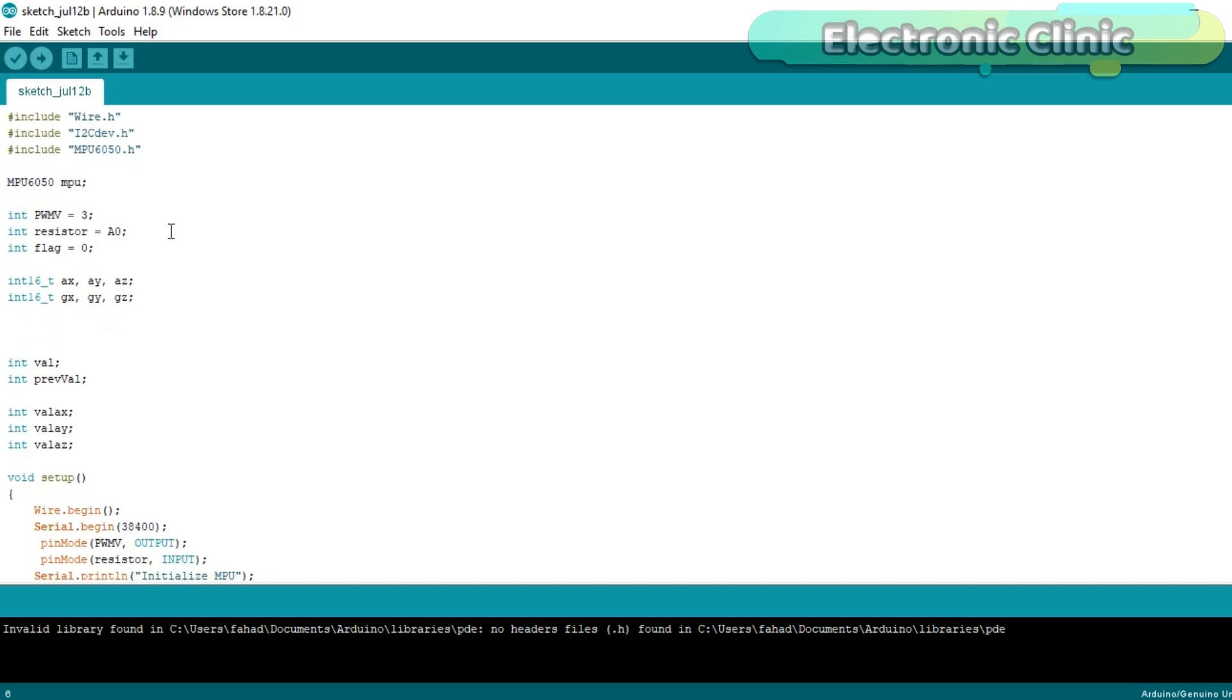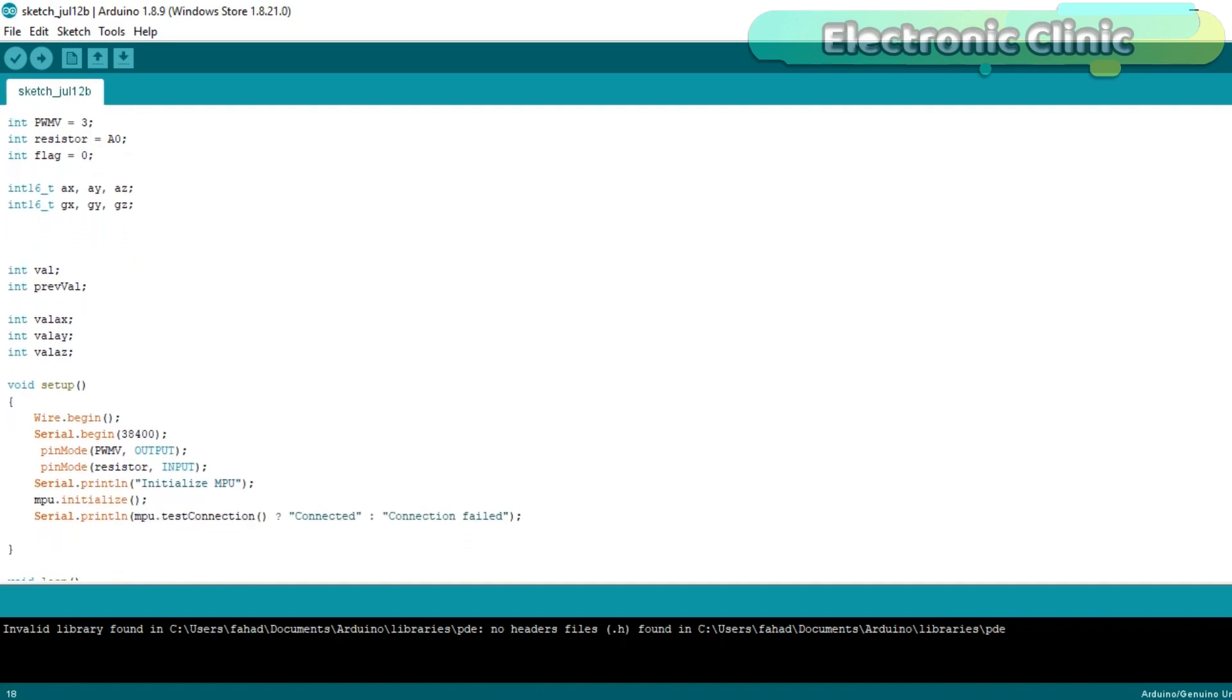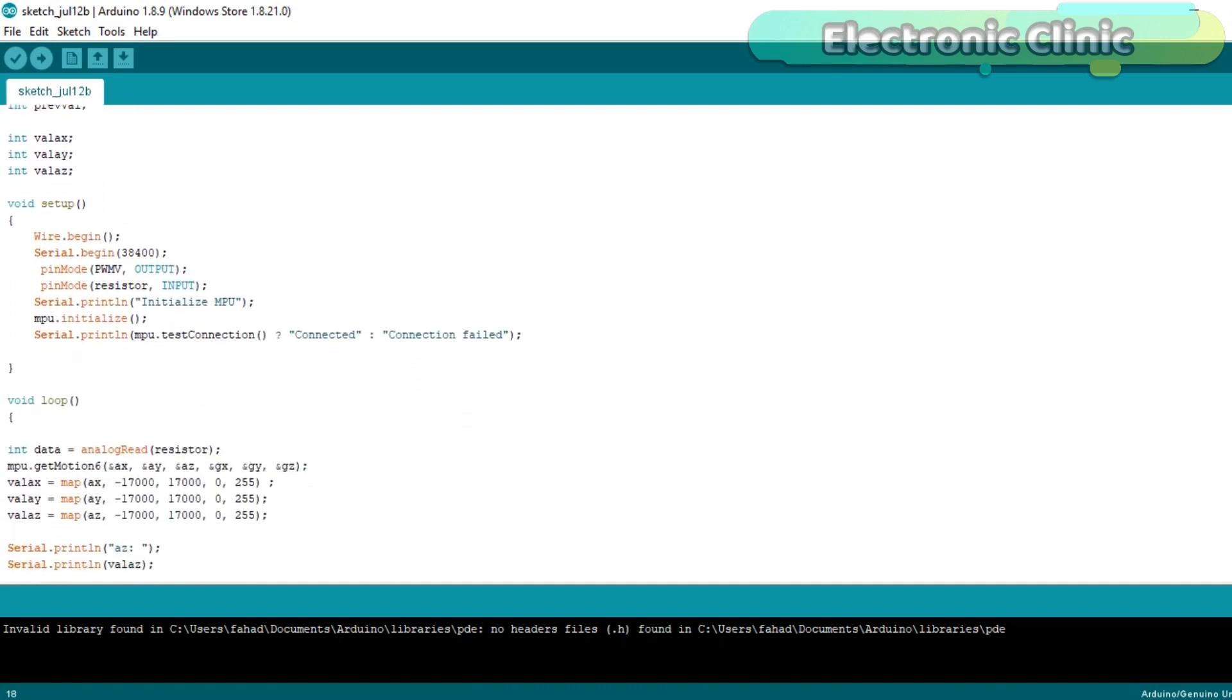The logic input A and logic input B pins of the MOSFET driver are connected with the Arduino's pin number 3, which is the PWM pin. A variable resistor is connected with the analog pin A0 of the Arduino.